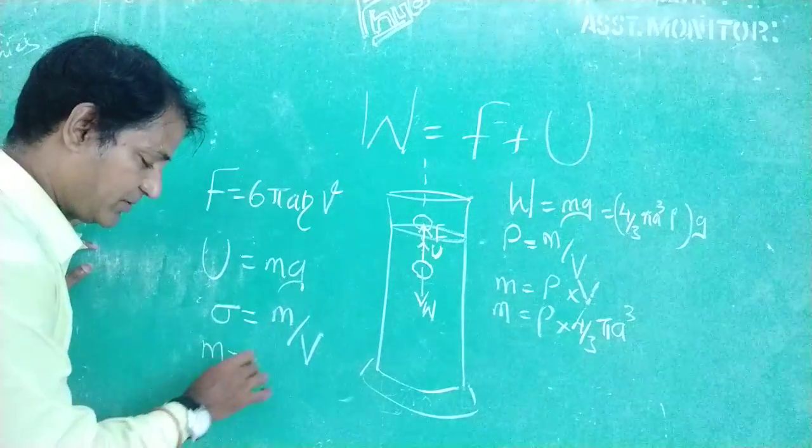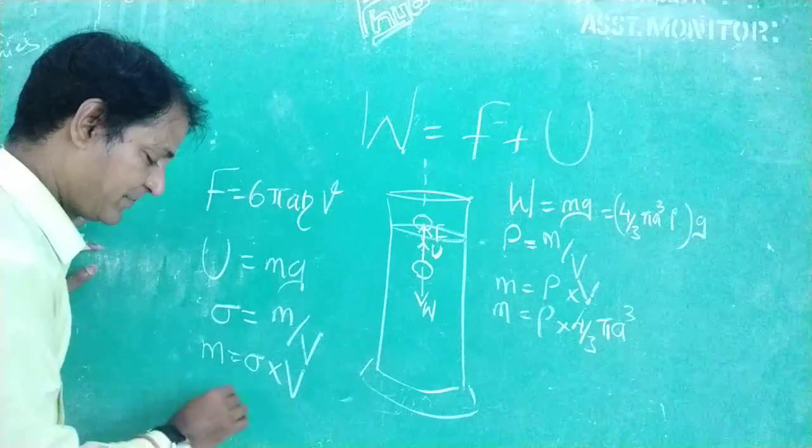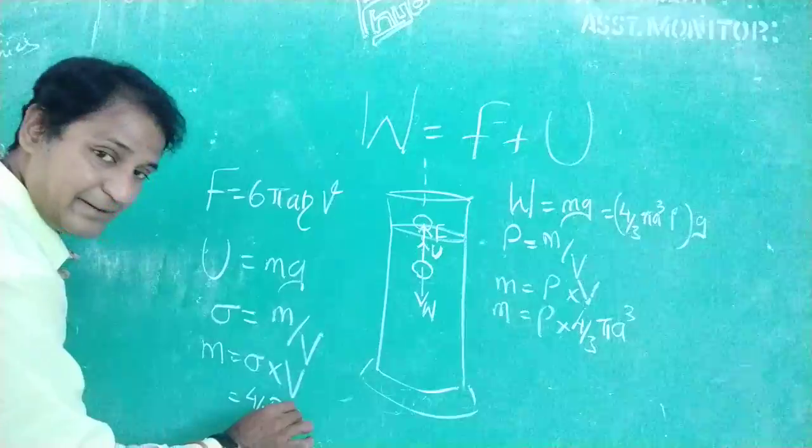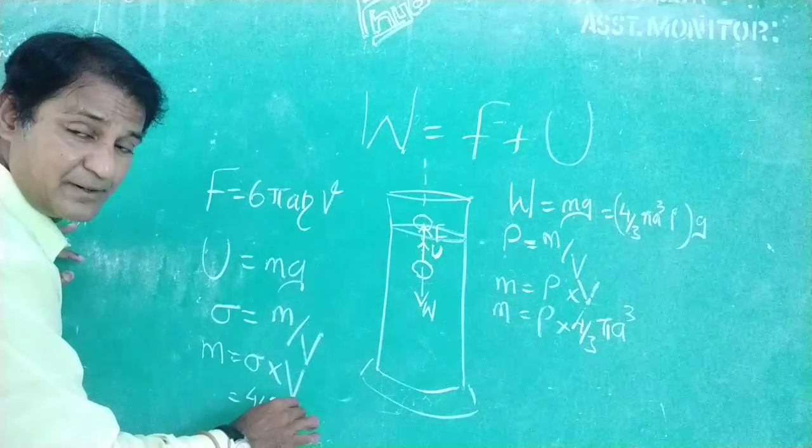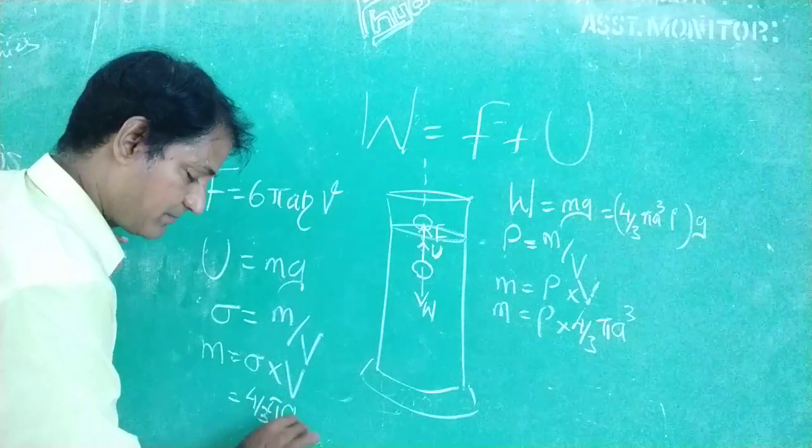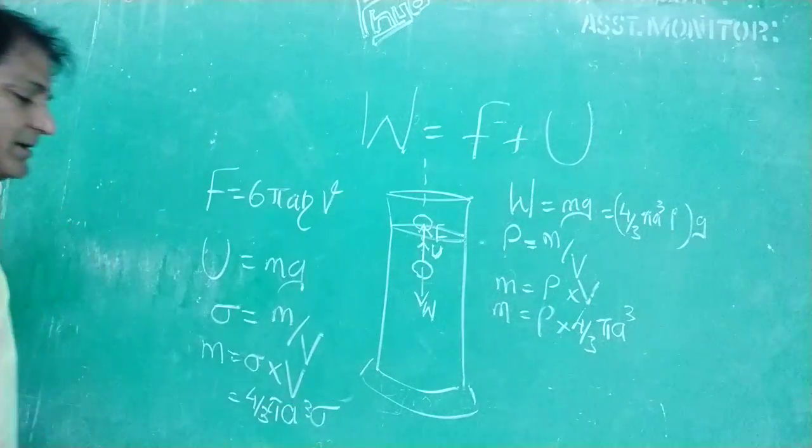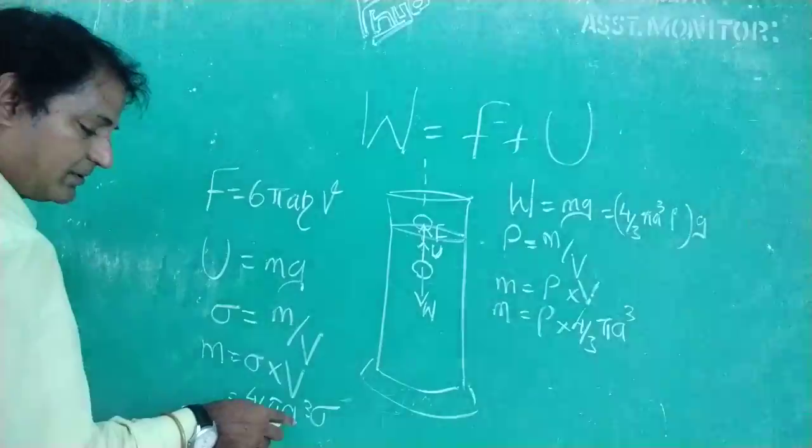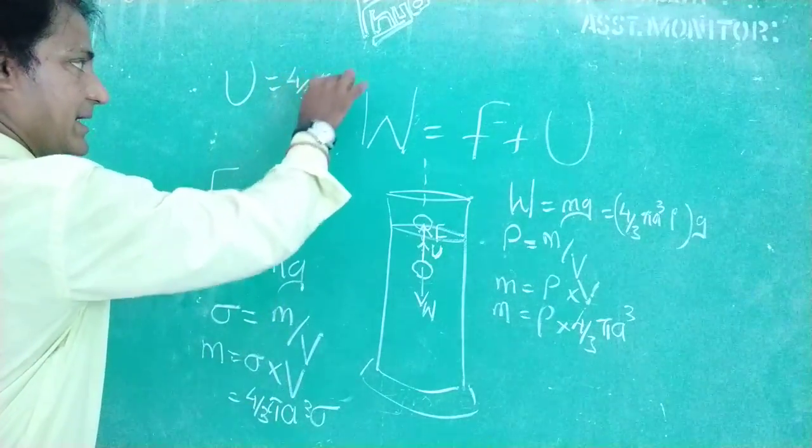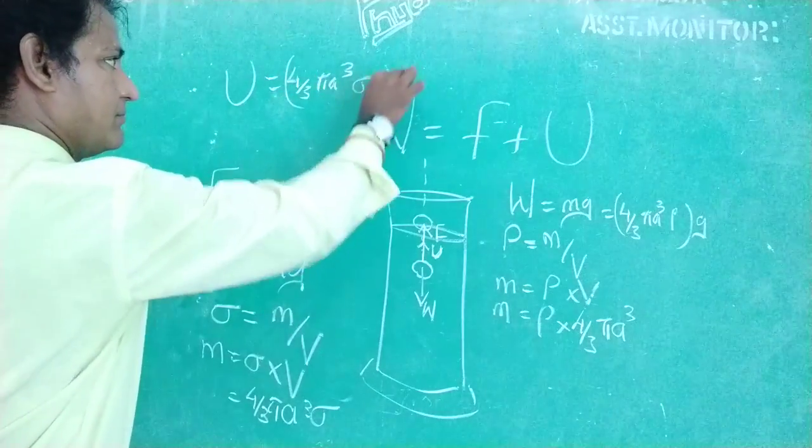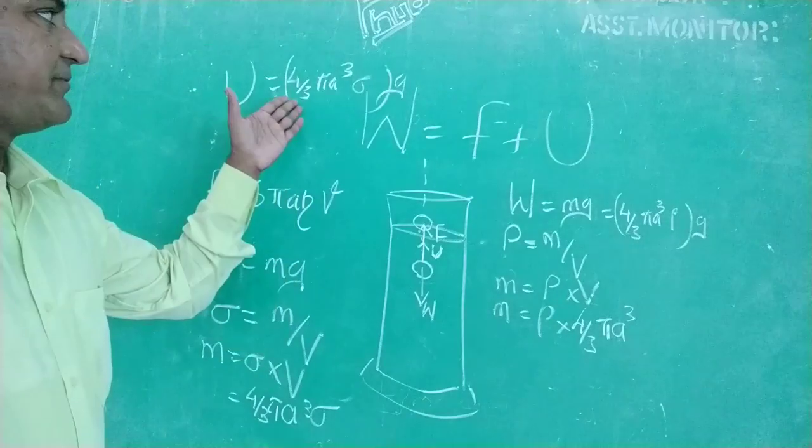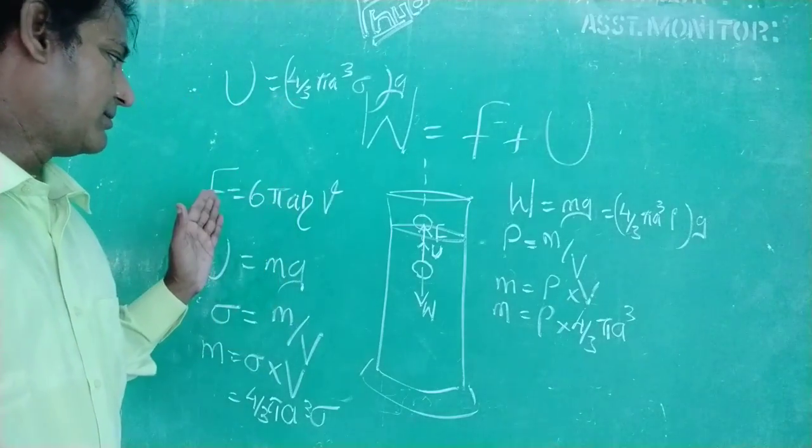So the density of the liquid, which is equal to the volume of the metal ball, is sigma mass by volume. So M is equal to sigma into V, that is 4 by 3 pi. Again, since the volume of the liquid displaced is equal to volume of the metal ball, then radius will be same. A cube sigma. Now substitute the value of this M here. So U is equal to 4 by 3 pi A cube sigma into G. So we have found out the value for U, F, and W.